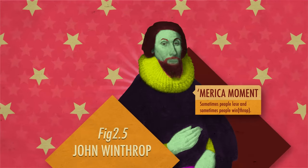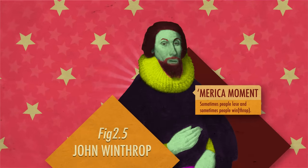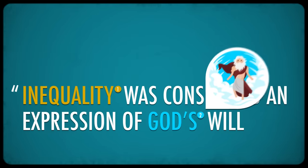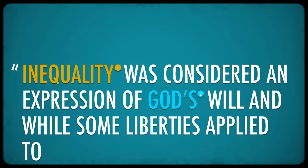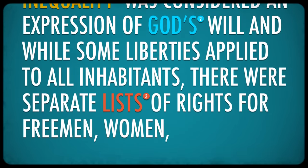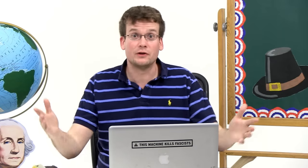As John Winthrop declared, some must be rich and some poor, some high and eminent in power and dignity, others mean and in subjection. Or as historian Eric Foner put it, inequality was considered an expression of God's will, and while some liberties applied to all inhabitants, there were separate lists of rights for freemen, women, children, and servants.